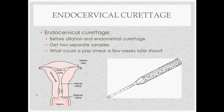Endocervical curettage — done only sometimes — involves getting one sample from the endocervix and one from the endometrium. You want to do the endocervical curettage before dilating or doing the endometrial curettage, so only endocervical cells are in that sample. If you dilate first, the dilator passes the internal os into the endometrium, mixing endometrial cells with endocervical cells, defeating the purpose. The goal is two separate samples to determine whether cancer has spread to the cervix or if pathology is isolated to the cervix or present in both.